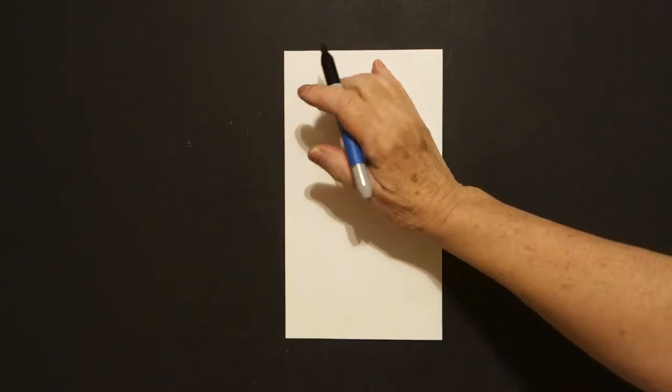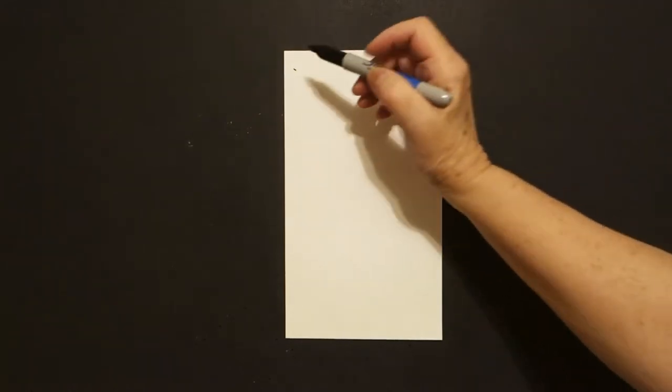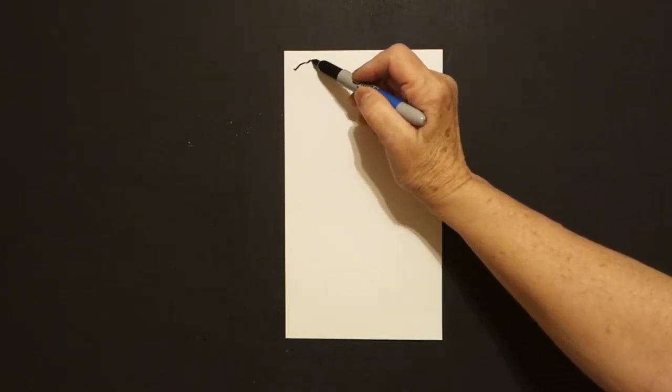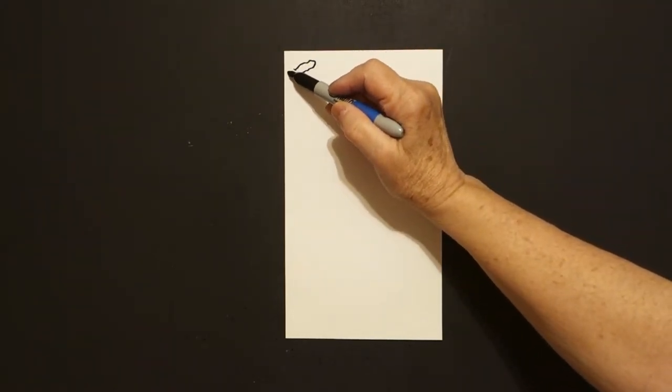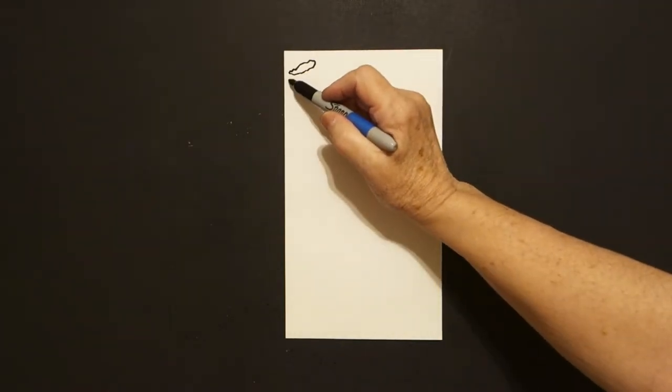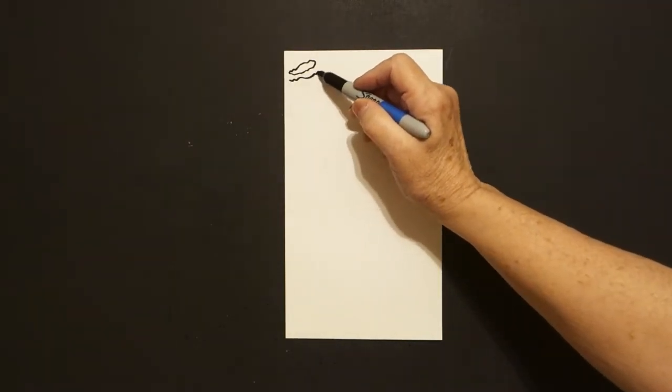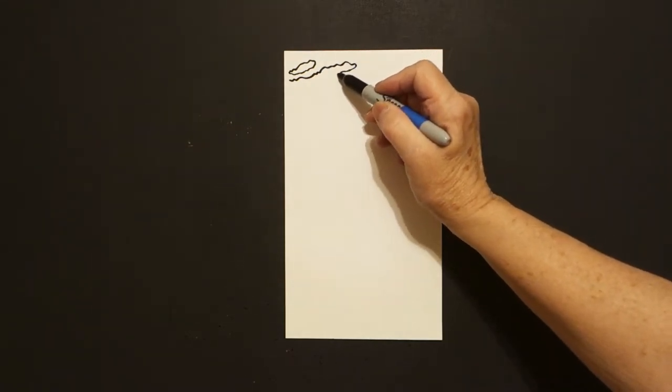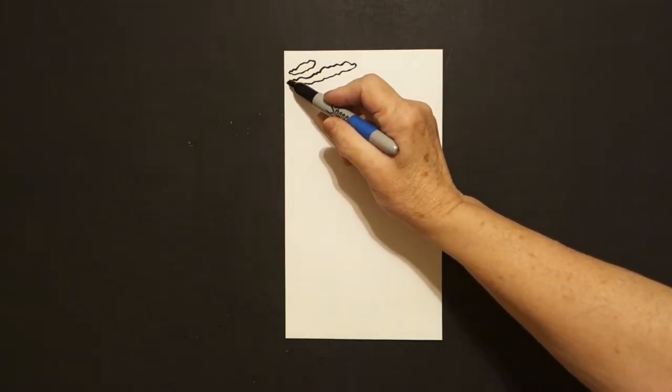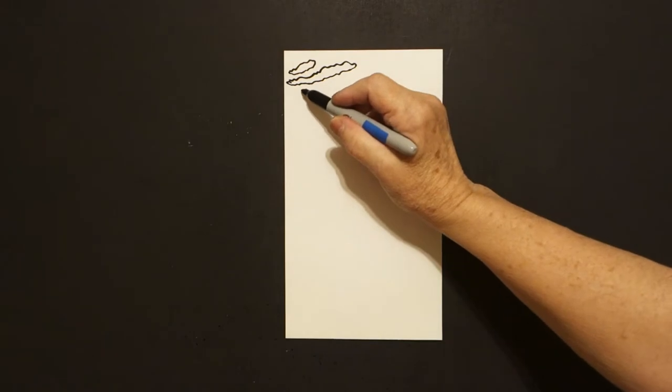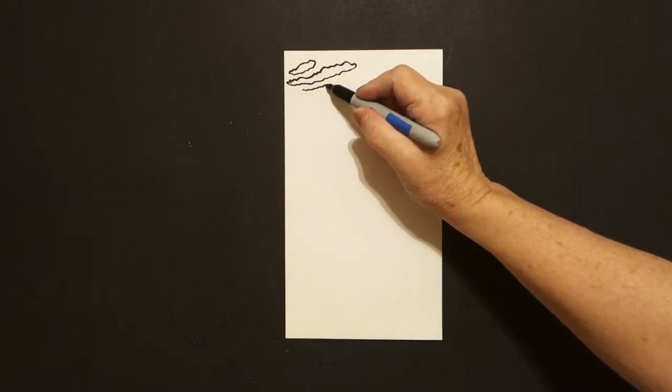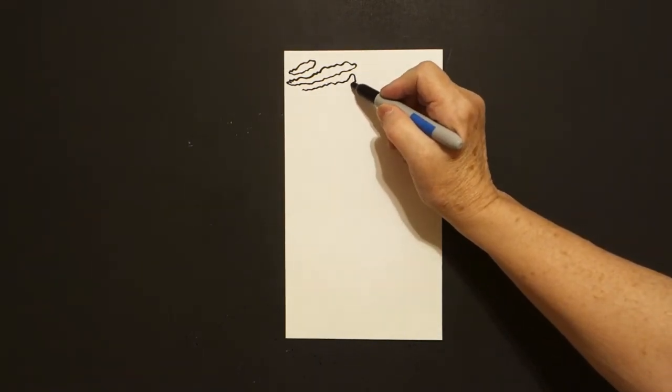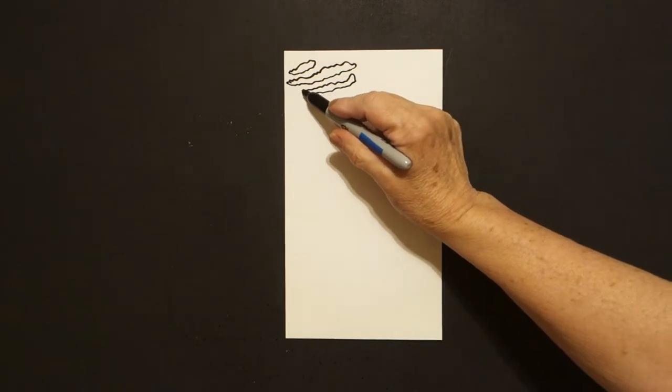We're going to start way up here on the left and we're just going to put a dot and then we're just going to draw a little curve line, curve line, wavy line and connect. Right underneath it we're just going to draw a curve line, wavy line out, back and connect. One more if you have room. Wavy line, wavy line, curve line up, back and connect.